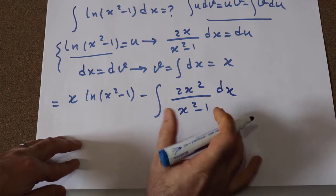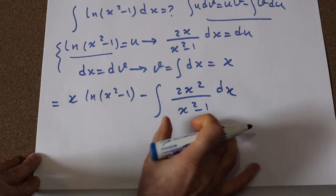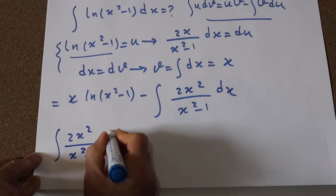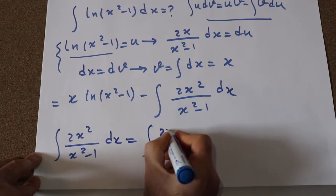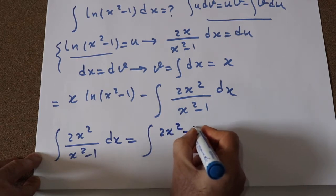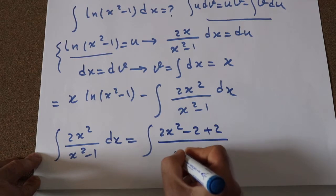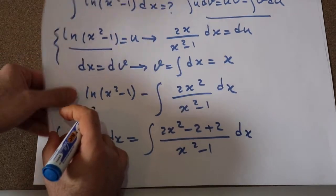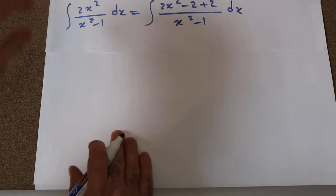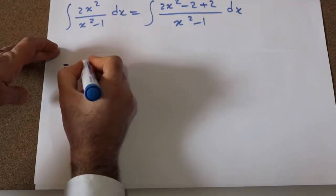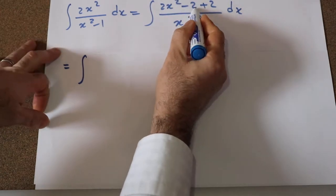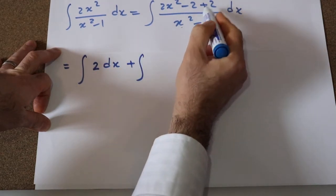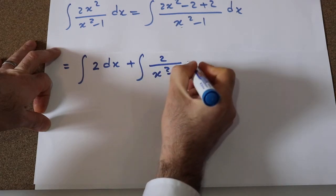So basically here you need to calculate the integral of 2x²/(x² - 1) dx. You can rewrite it as the integral of (2x² - 2 + 2) divided by (x² - 1) dx. Then, dividing (2x² - 2) by (x² - 1) gives 2, so this becomes the integral of 2 dx plus the integral of 2/(x² - 1) dx.